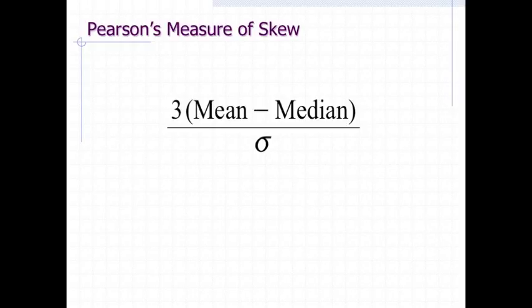The relationship between skew and the relative size of the mean and median led statistician Carl Pearson to propose this simple and convenient numerical way of measuring skew. Remember that lowercase sigma represents the standard deviation. Verbally, this formula reads 3 times the difference between the mean and median divided by the standard deviation.